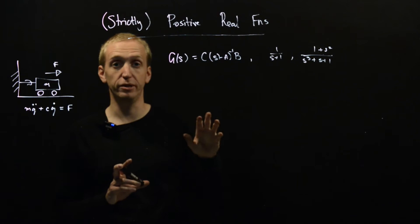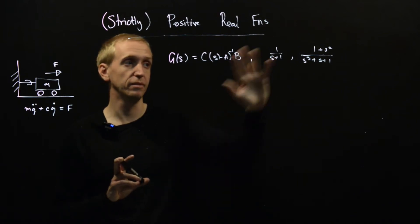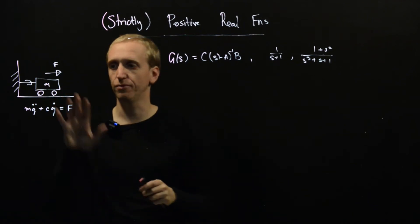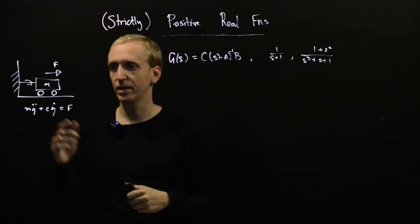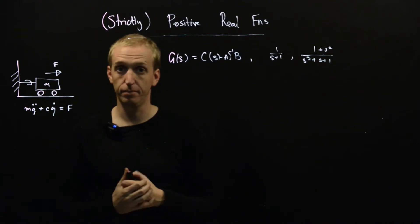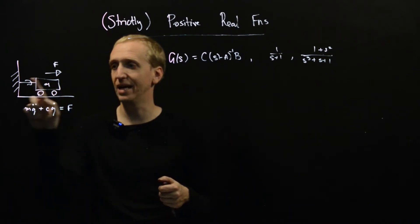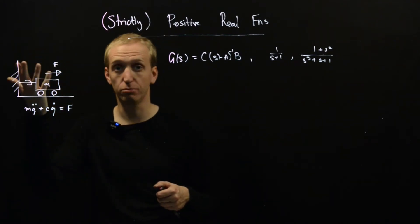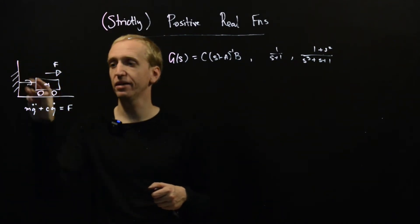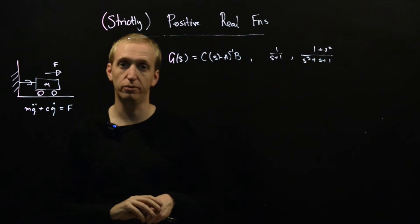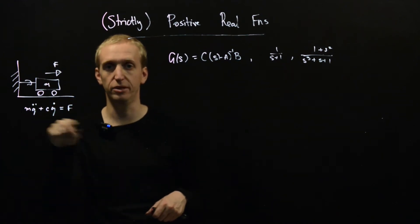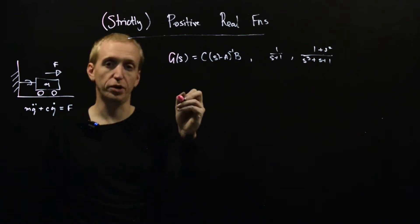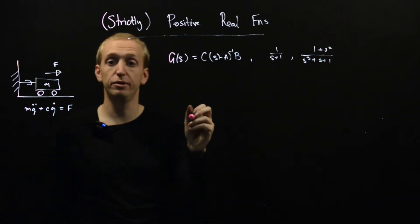So strictly positive real and positive real transfer functions. So we're talking about transfer functions, and imagine that these are sort of transfer functions for systems with no internal sources of energy. So maybe a mass connected to a wall by a damper. We have some external force which can provide input to our system, but nothing internal to this setup will provide energy and we'll illustrate the definitions through this.